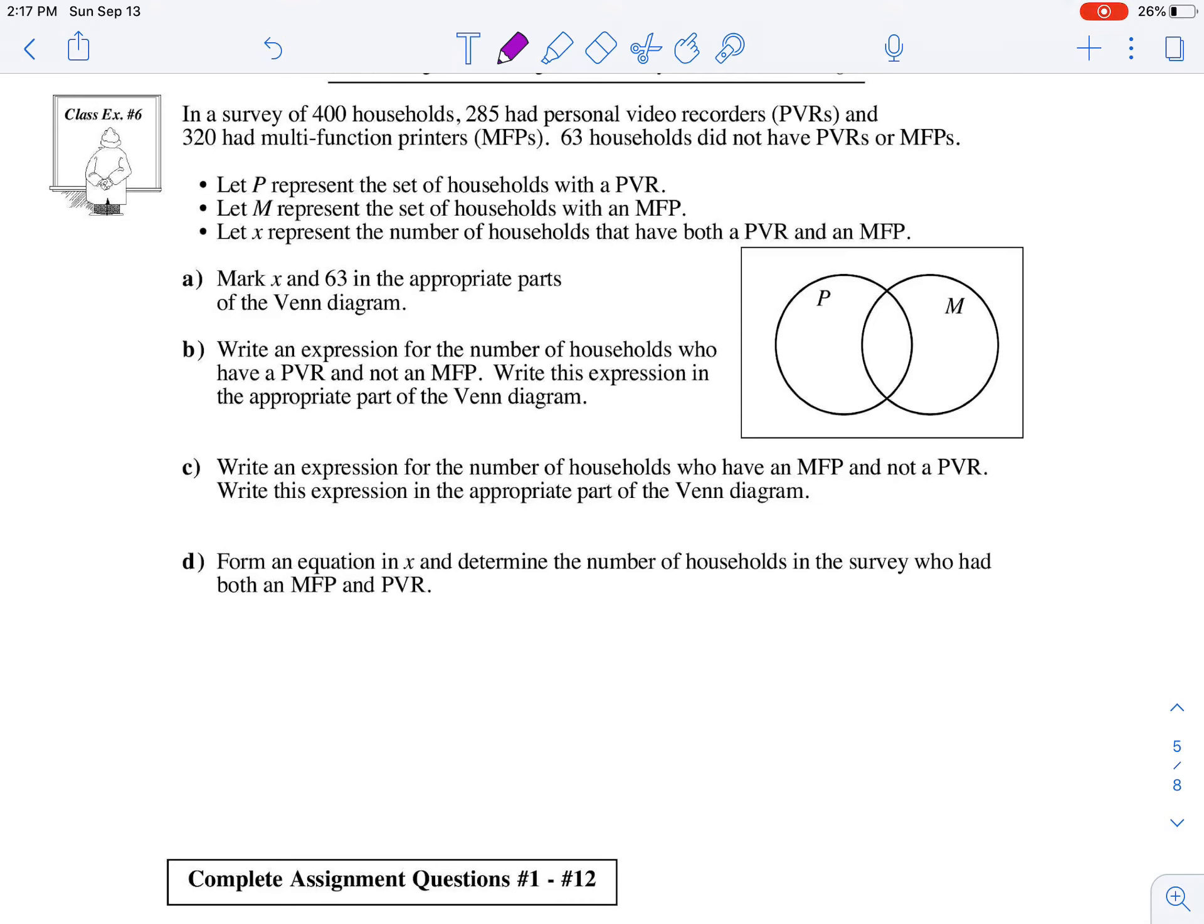So mark X and 63 in the appropriate parts of the Venn diagram. X represents the number of households that have both a PVR and an MFP, so that represents the intersection of these two sets. This is going to cause a bit of a problem because if you remember from the last question, we need to know what that intersection was before we could figure out just P or just M.